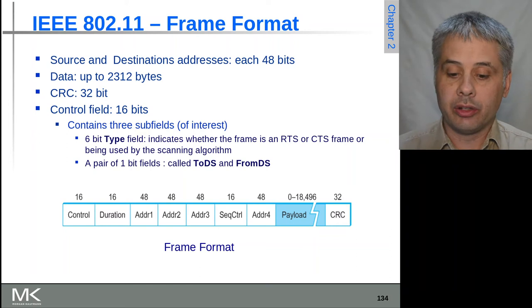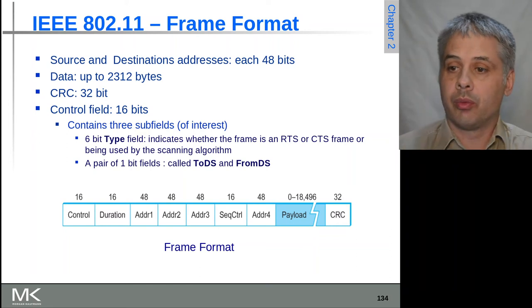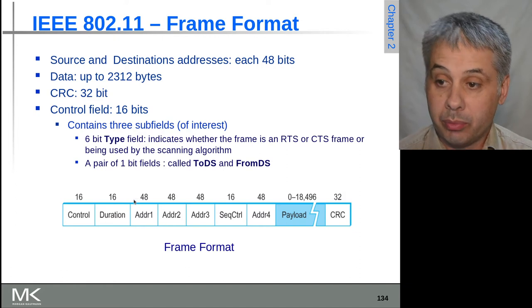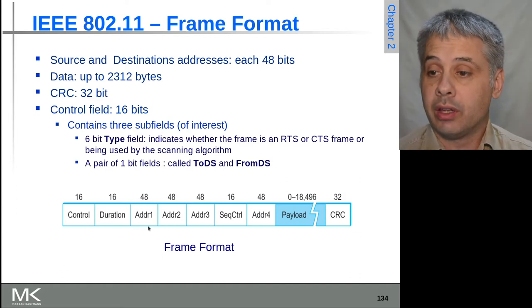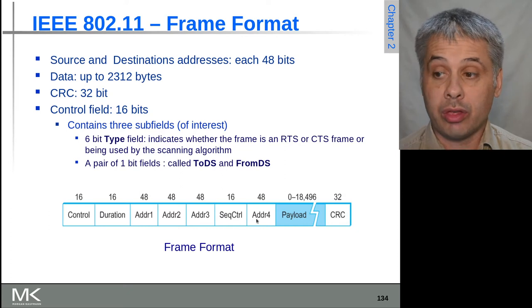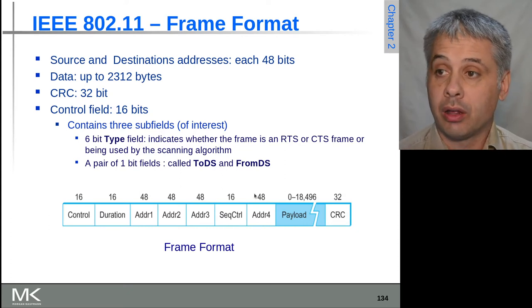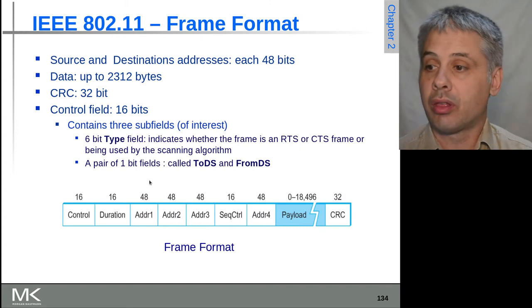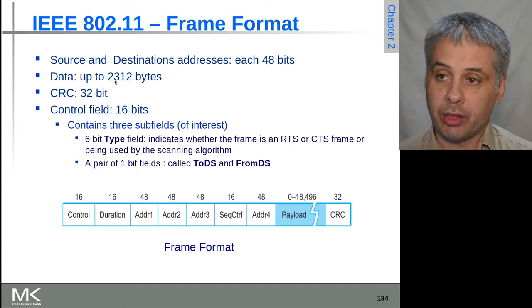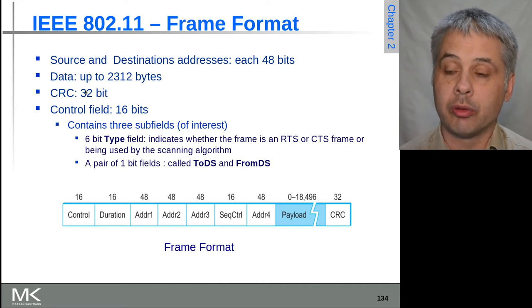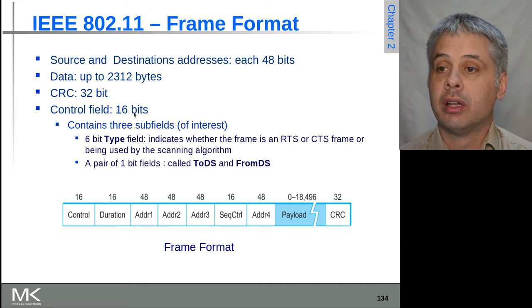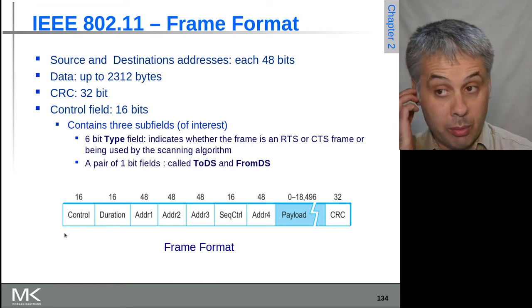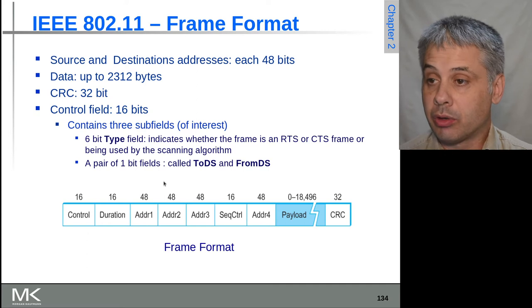Looking at the 802.11 frame format, we have address one and address two, and also address three and four. The addresses are 48 bits each because they're Ethernet-style addresses. We can have up to 2312 bytes, a 32-bit CRC similar to Ethernet, and a 16-bit control field which has a number of subfields of interest.